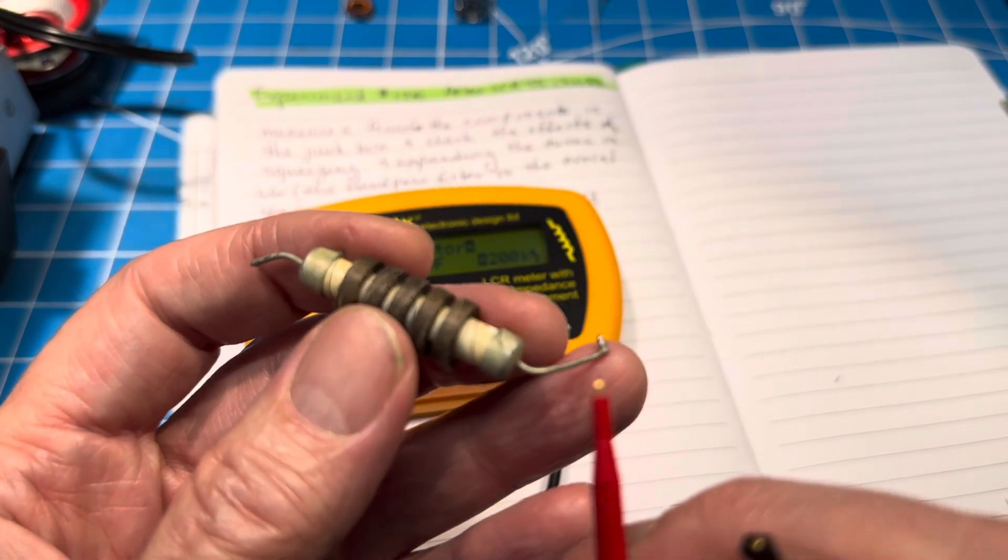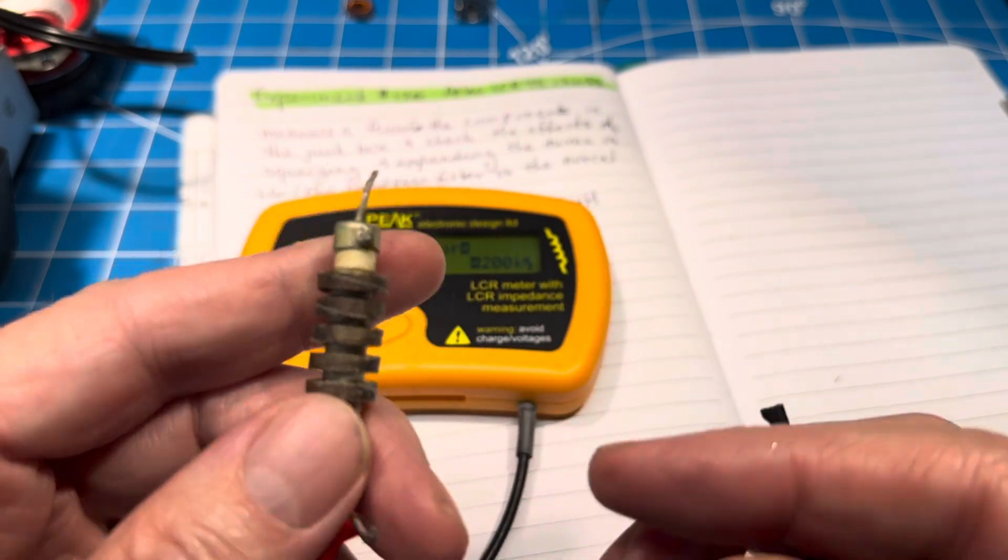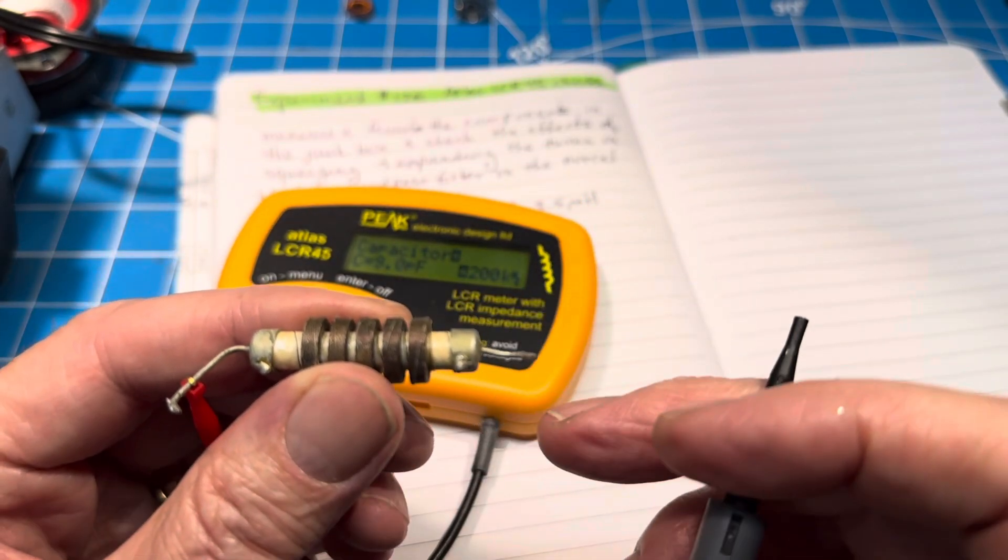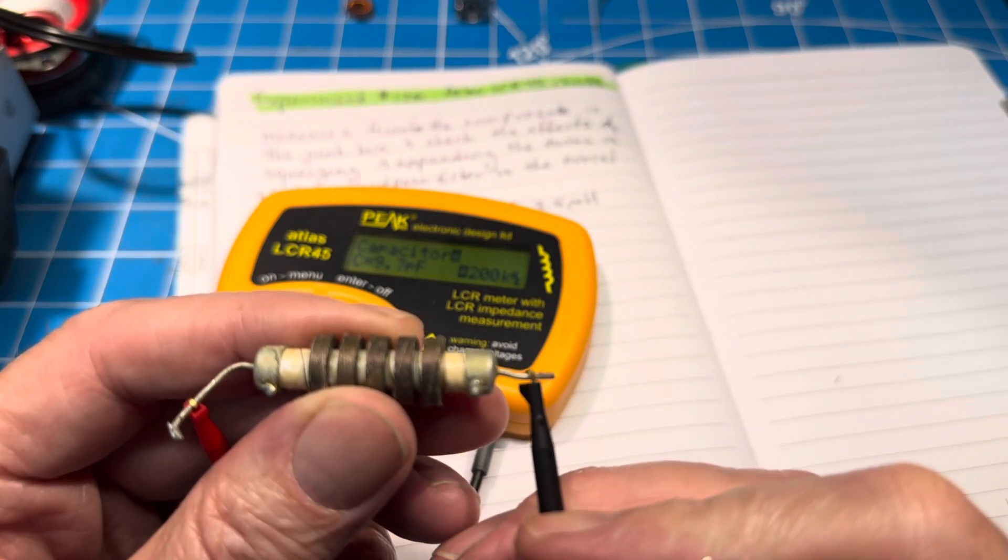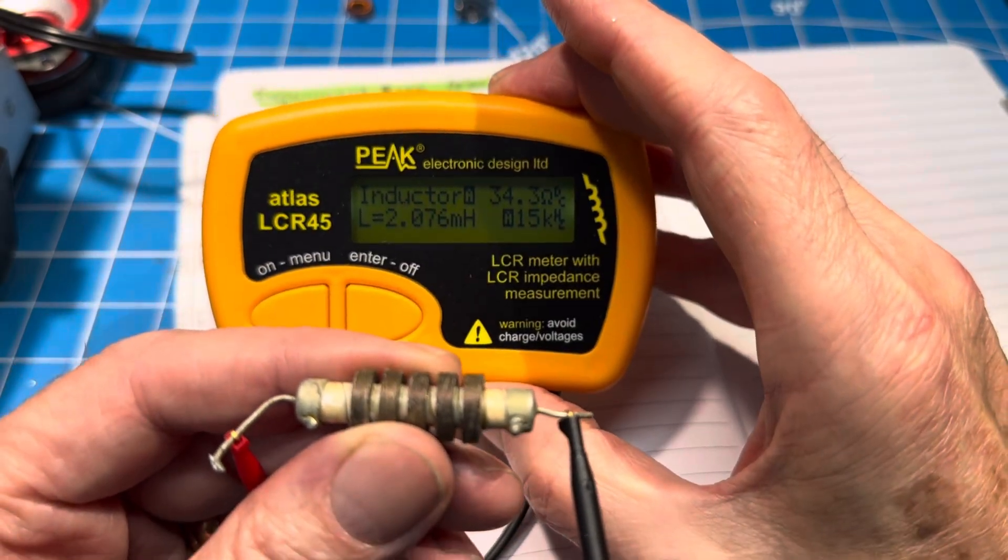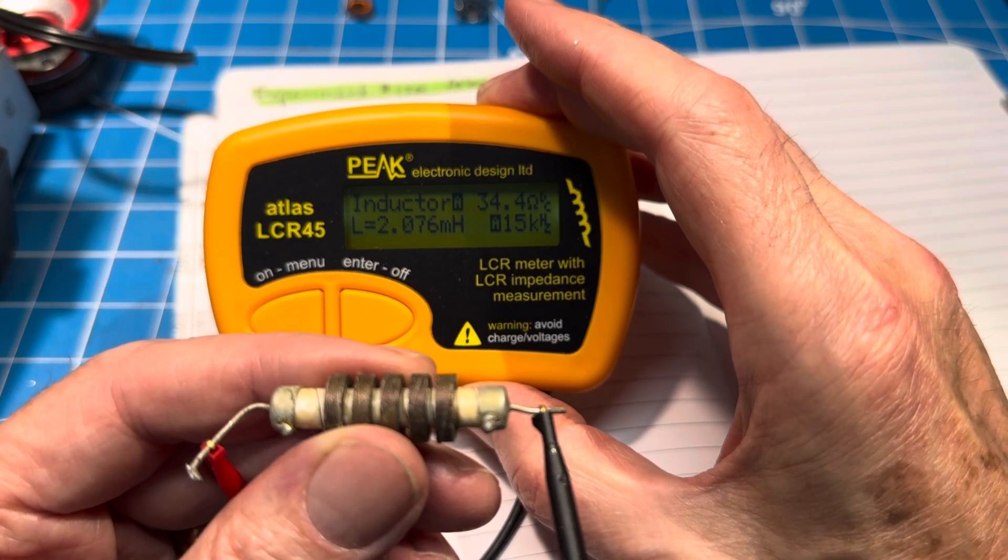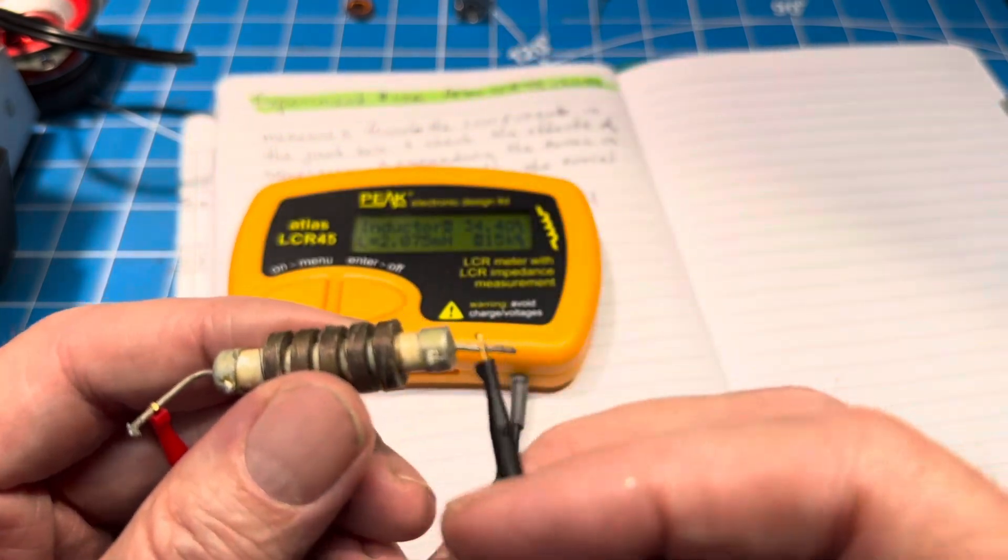And I'll do one more for the fun of it. This is for the old timers. So what do you think the value of this will be? This looks like somebody's plate choke or something. So that's two millihenries, so it's much bigger than anything else.